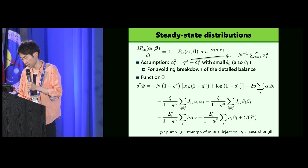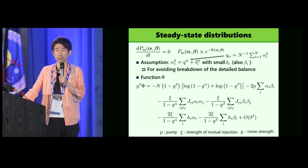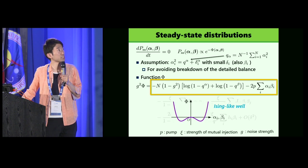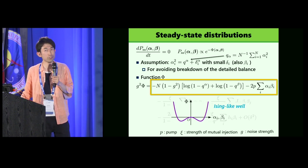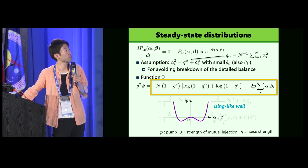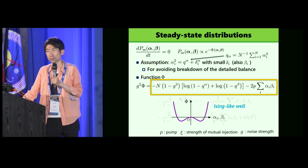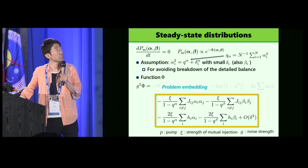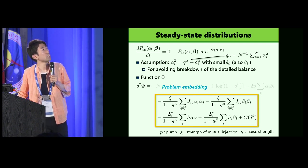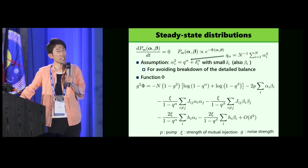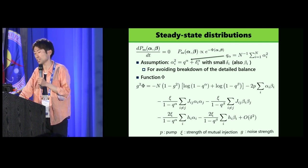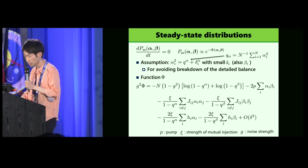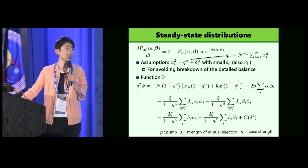Note that alpha and beta are not discrete variables, but continuous ones. So we need some effect for generating Ising-like behavior. The first term generates Ising-like well in the potential function, and pump field strength P controls the location and the depth of the well. The other part is for problem embedding. So we tune parameters P and C to adjust the balance of the two parts, Ising-like well in the problem embedding part to obtain the optimal solution from the steady-state distribution.